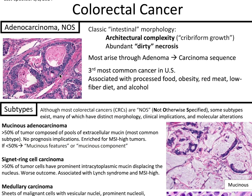Adenocarcinoma not otherwise specified, or NOS. This has classical intestinal morphology, with architectural complexity including cryptiform growth and abundant dirty necrosis. Most arise through the adenoma-to-carcinoma sequence. It is the third most common cancer in America, associated with processed food, obesity, red meat, low fiber diet, and alcohol. In cytopathology, the classic finding for colorectal cancer metastasis is picket fence arrangement with abundant necrosis.